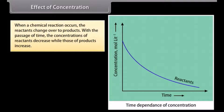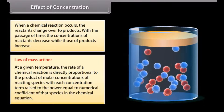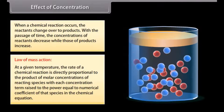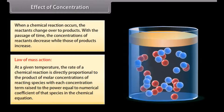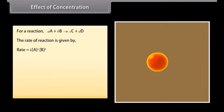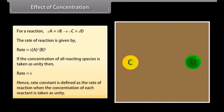Effect of concentration. When a chemical reaction occurs, reactants change to products; with the passage of time, concentrations of reactants decrease while those of products increase. Law of mass action: at a given temperature, the rate of a chemical reaction is directly proportional to the product of molar concentrations of reacting species, with each concentration term raised to the power equal to the numerical coefficient of that species in the chemical equation. Rate = K[A]^a[B]^b. If the concentration of all reacting species is unity, rate equals K. Hence, rate constant is defined as the rate of reaction when the concentration of each reactant is taken as unity.